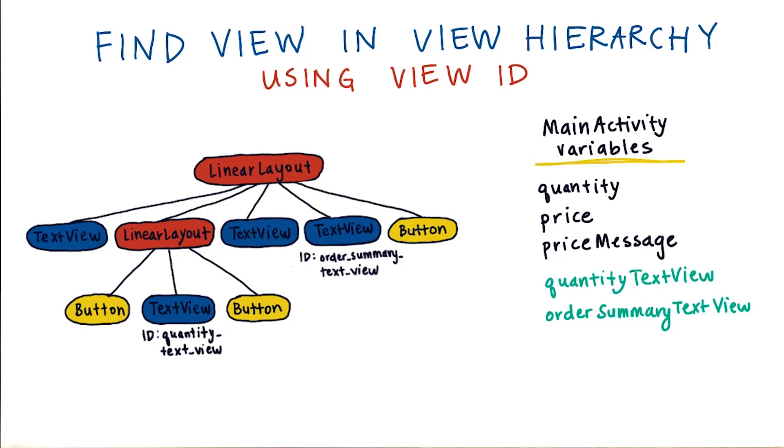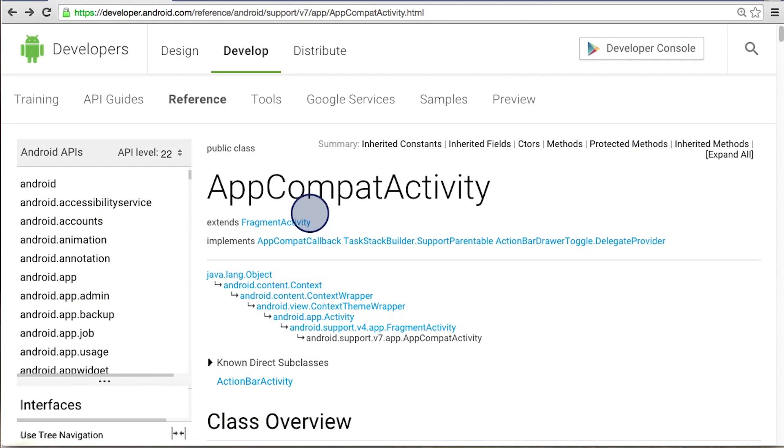Okay, we've established that views have view IDs that we can refer to them later in the Java code. We also established that we want variables that point to these views so that we can manipulate these views. But we still don't exactly know how to make the connection between this variable and this specific Java object. And same for this variable and this Java object.